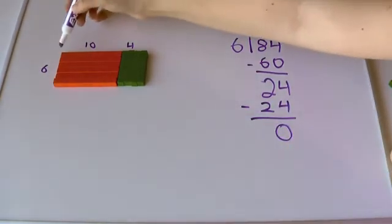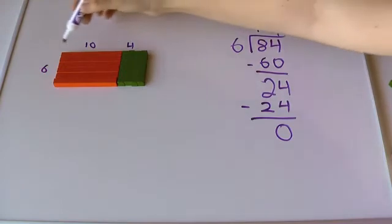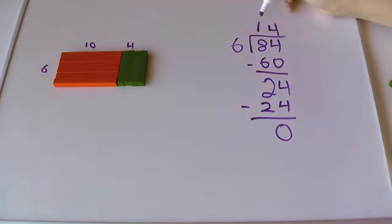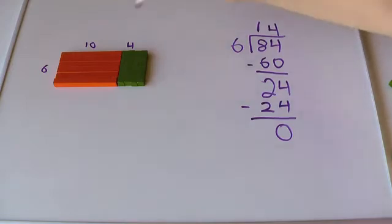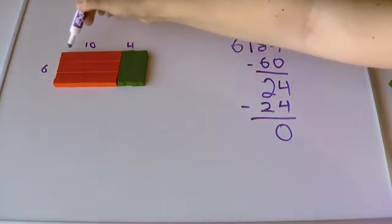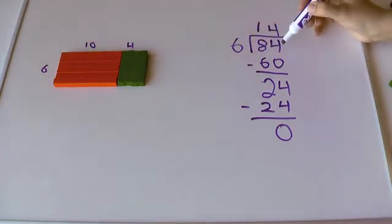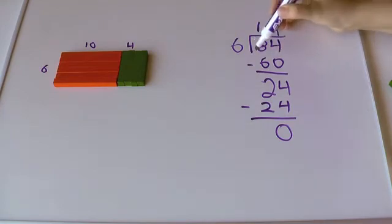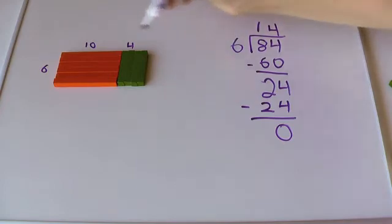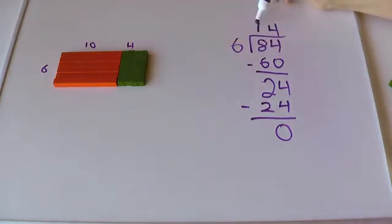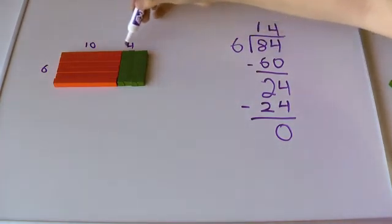And so I had 24 down here, and I took away 24. So 4 times 6 is 24. That's how much I took away. So, to show it in symbols, minus 24. And I have nothing left. So my final answer, the other side of my rectangle is 10 and 4. 14. So, this looks exactly like this. The entire rectangle is 84. One side is 6. Other side is 14. 10 and 4, 14.